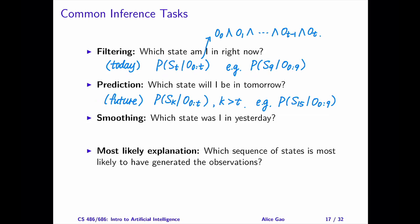For example, we may want to estimate the probability of being in a state on day 15 given the observations from day 0 to 9.